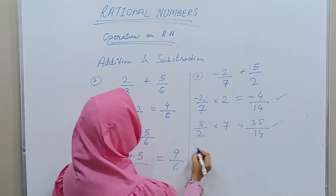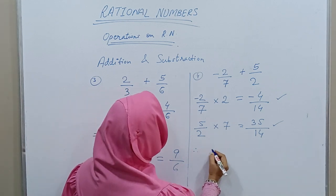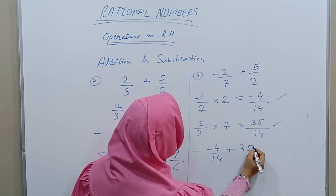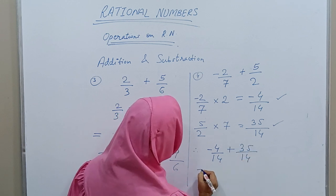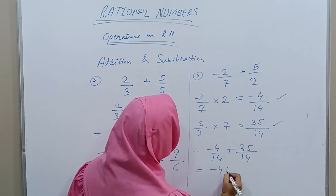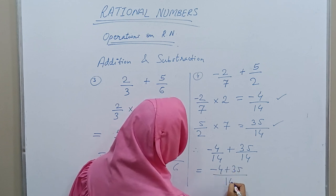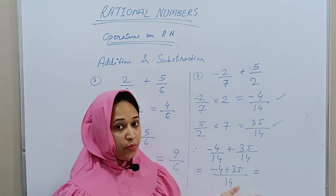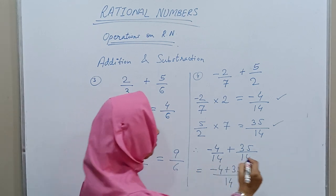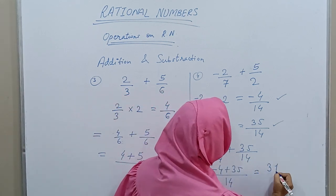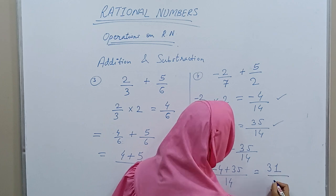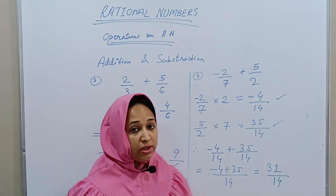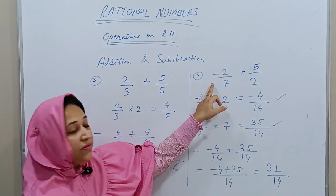Now the denominators are the same. So we compute -4/14 + 35/14 = (-4 + 35)/14. The signs are different so we subtract: 35 - 4 = 31, and the sign of the greater number (35) is positive. The final answer is 31/14.